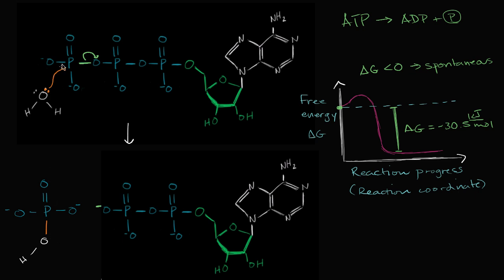You have to remember: electrons are negative, and they're surrounded by these negative charges. So they have to overcome getting close to these things. As they're approaching these negative charges, they want to repel each other, so you have to overcome that.